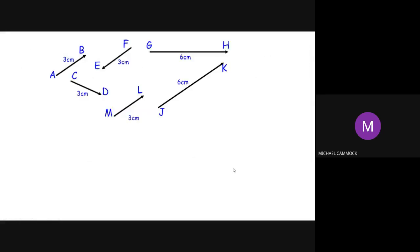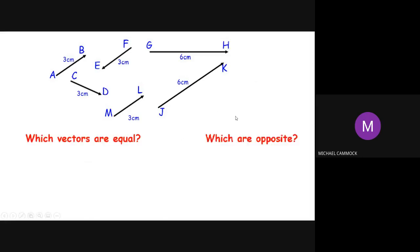I have a bunch of vectors on the screen with their heads, tails, and lengths shown. I'd like you to tell me which ones are equal — remember, equal means same direction and same magnitude, and you have to have them the right way around in terms of beginning and end. AB and ML? Absolutely — those are equal vectors.